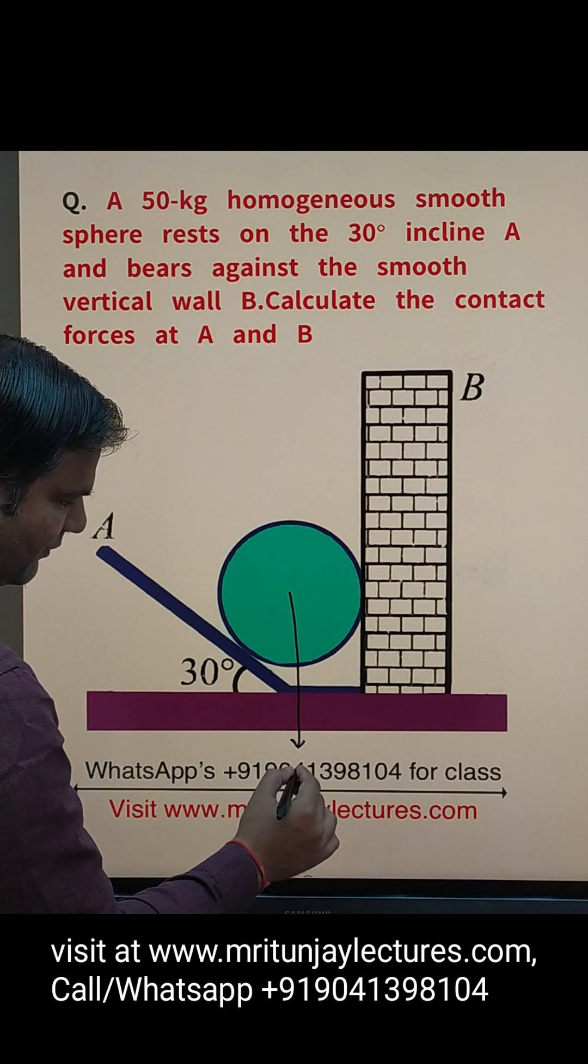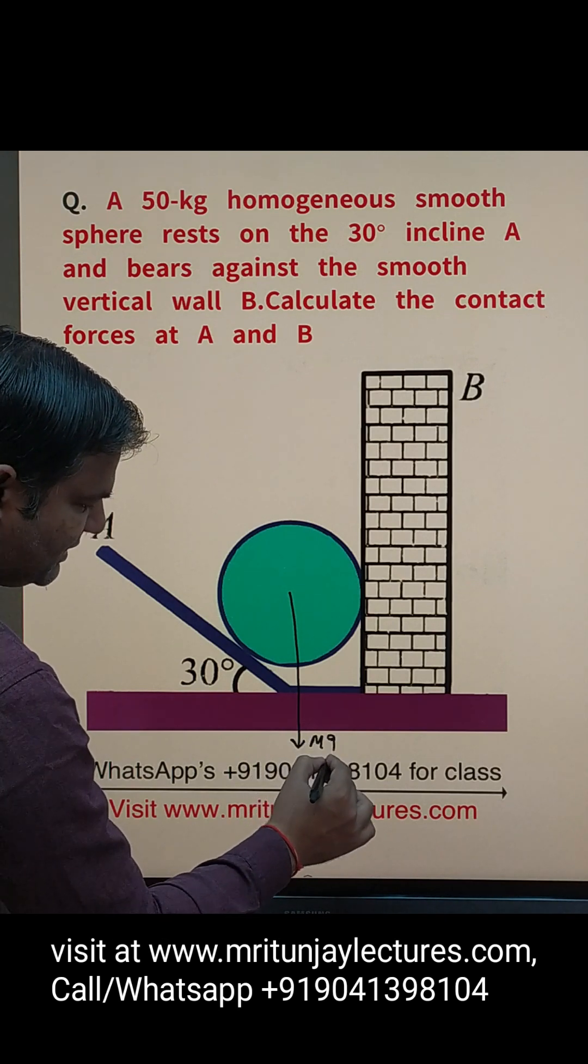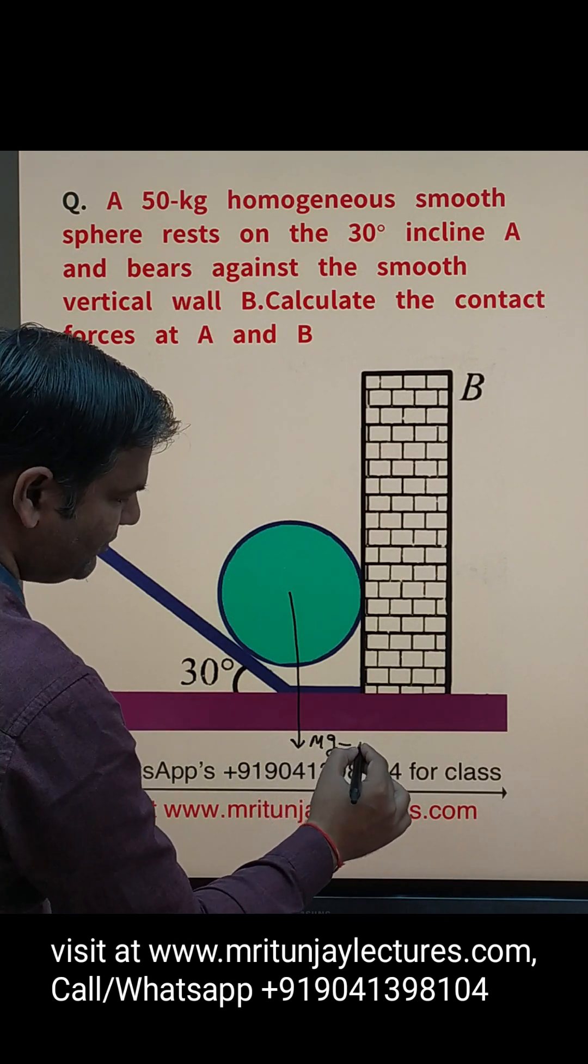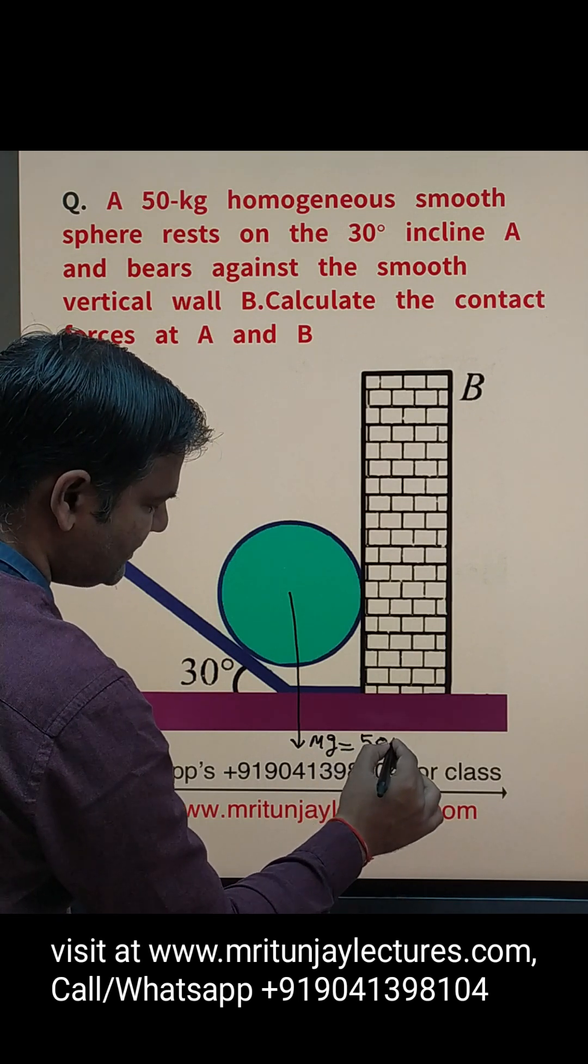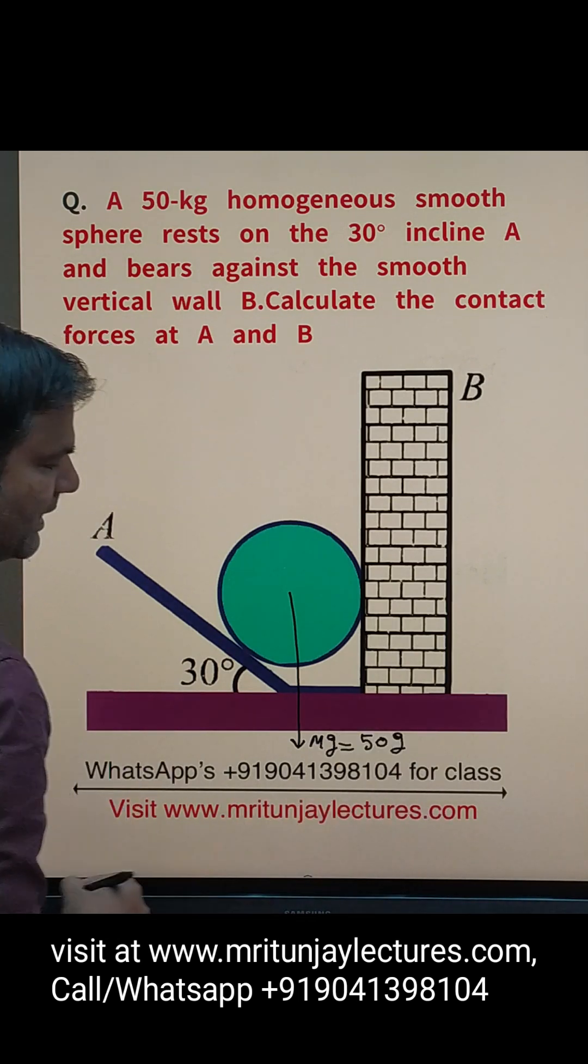Mg always works downward, so Mg like that one. Mg is how much? M is 50, so 50g.